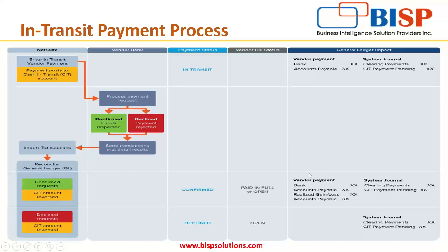If due to some errors the payment is declined, a reversing journal entry is also passed. The difference is that when the payment is confirmed the bill status is 'Paid in Full,' but if it is declined the bill remains open for payment. This is the main difference between confirming and declining a payment.